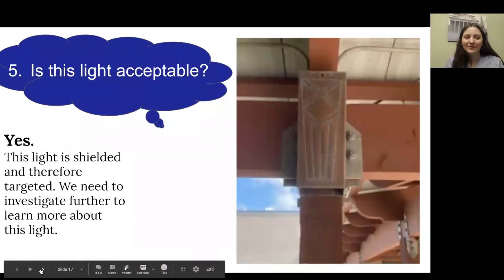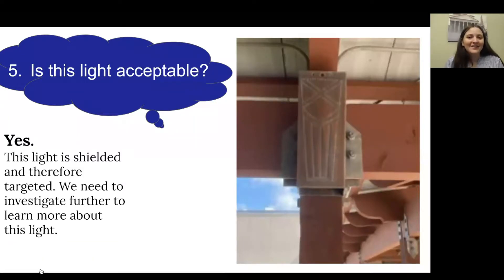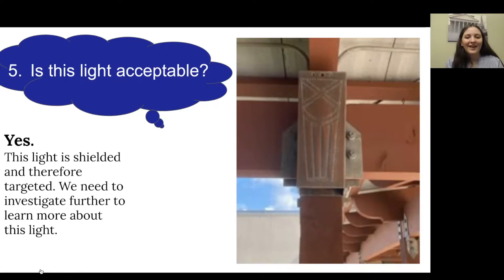Number five: this light is acceptable. It definitely has a shield, so it is targeted down onto the pathway it is serving. We don't know much about color temperature or whether it is controlled, so we would need to investigate more.